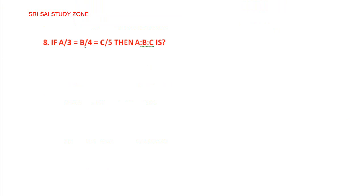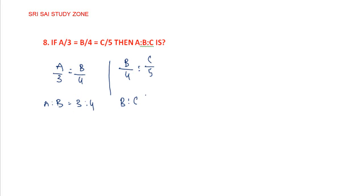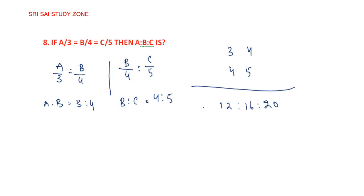If a by 3 is equal to b by 4 is equal to c by 5, then a is to b is to c. A is to b: multiply 3 times 4 gives 12. B is to c: multiply 4 times 5 gives 20. The values of a is to b is to c is 3 is to 4 is to 5.